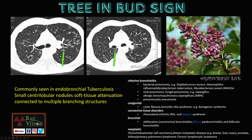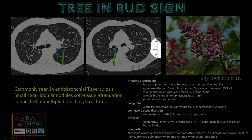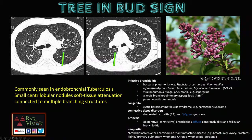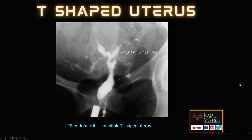Next, the tree-in-bud sign: multiple centrilobular nodules of soft tissue attenuation connected to multiple branching patterns mimic a tree in bud. This tree-in-bud sign is seen in endobronchial tuberculosis but also in congenital causes like cystic fibrosis, connective tissue disorders like rheumatoid arthritis, and even malignancies including metastasis.